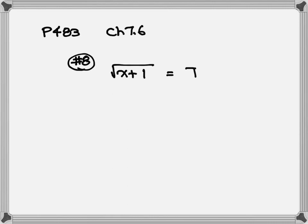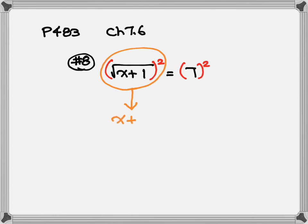For this section, we want to have the square root on one side and the number on the other side. Step 1: square both sides of the equation. On the left-hand side, the square root and the square cancel out. Just write down the number inside — no more square root. Equal to 49.